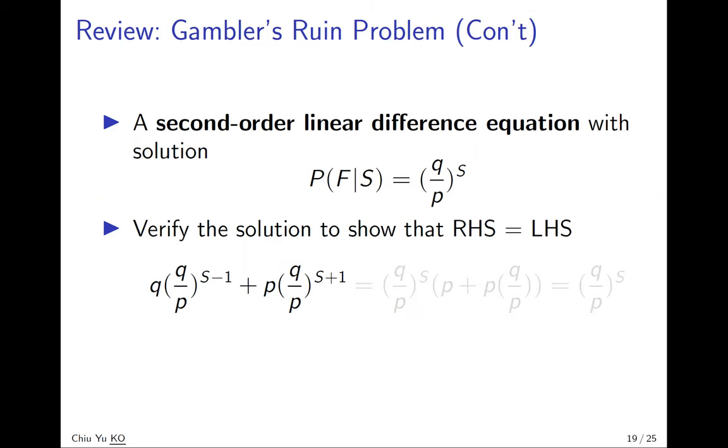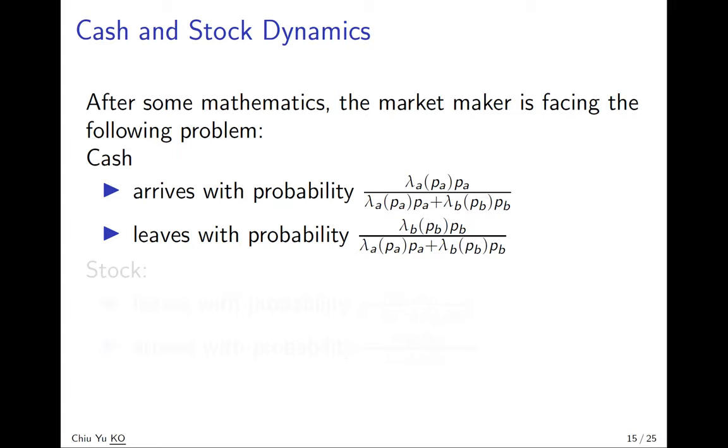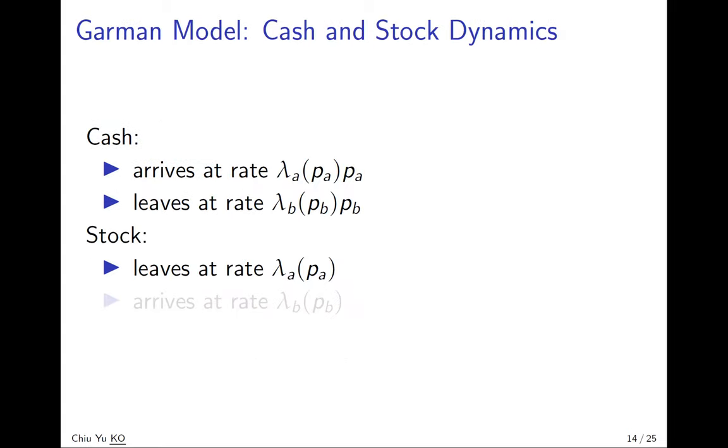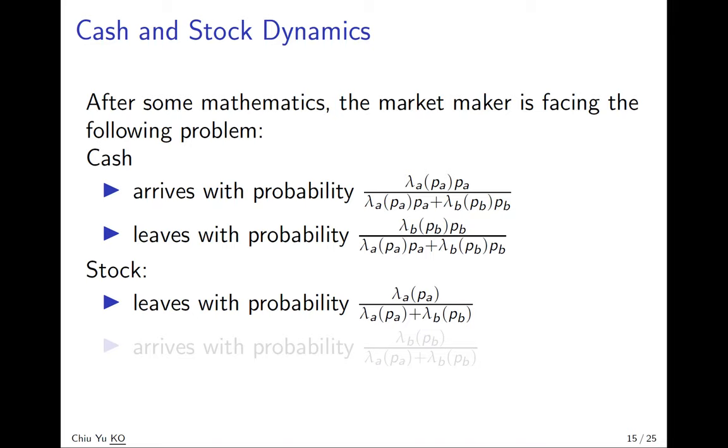So go back to the slide before, you see this is cache in and cache out. Lambda A P A, lambda P B. Or you can look at the ratio—this is the odd ratio. Cache is like lambda B over lambda, lambda B times P B over lambda A times P A.